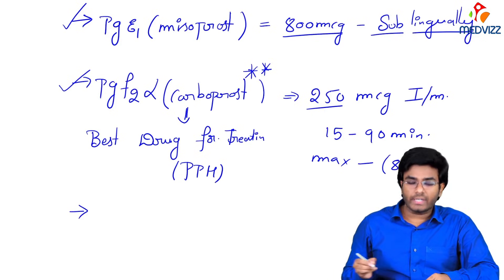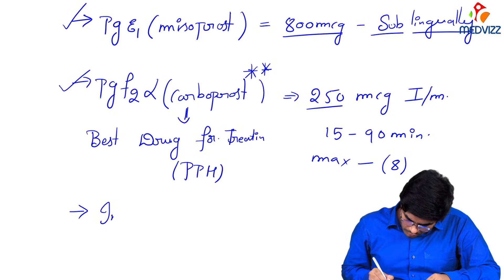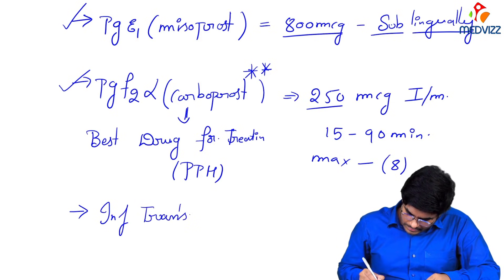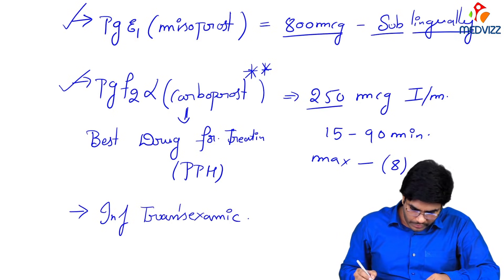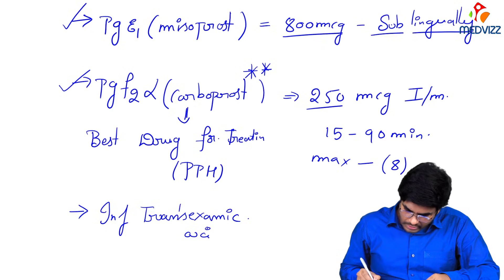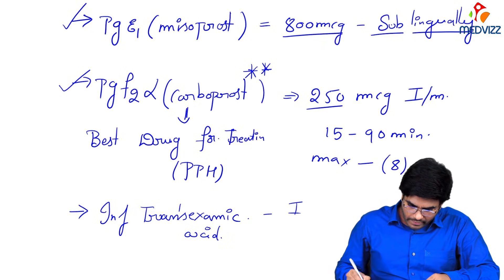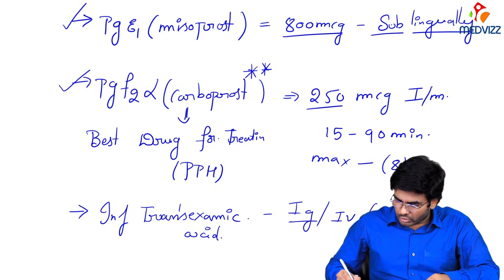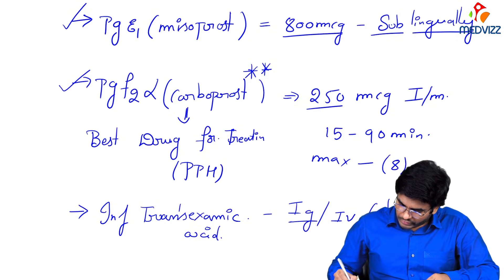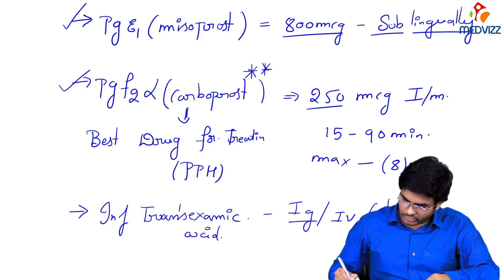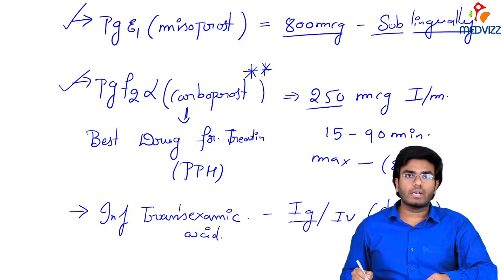Other than prostaglandins, we can also give injection tranexamic acid — 1 gram IV, given slowly over 20 to 25 minutes.